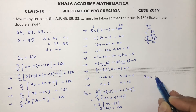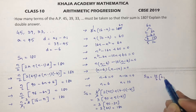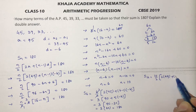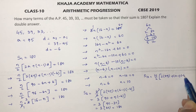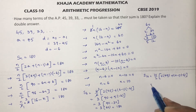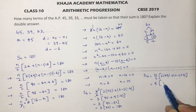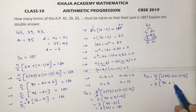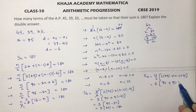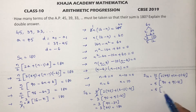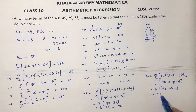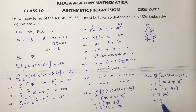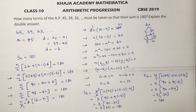Verifying S10: 10 by 2 into [2 times 45 plus (10 minus 1) into minus 6] equals 5 into [90 minus 54] equals 5 times 36 equals 180. So sum of 10 terms is also 180.